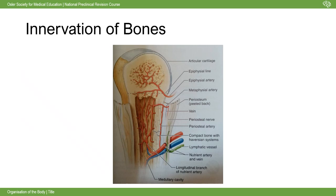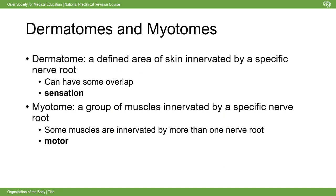Bones are very sensitive to tearing or tension - that's the type of receptors found in bone, which is why fractures are so painful. This sensation is provided by periosteal nerves and pain fibers. There are also vasomotor nerves that regulate blood flow through the bone marrow, helping control that metabolic function.